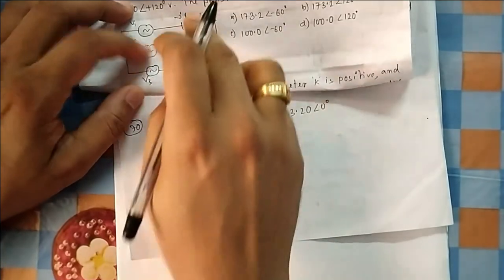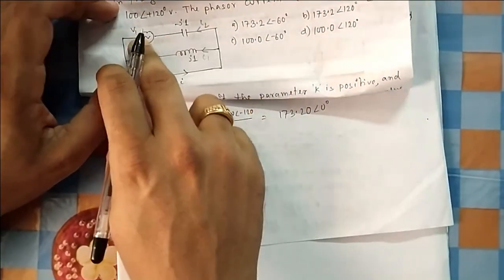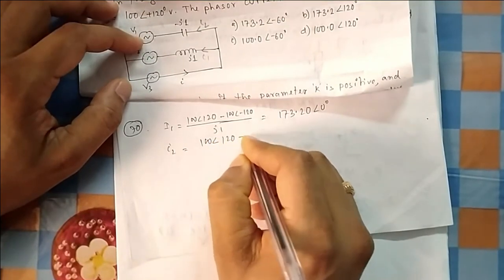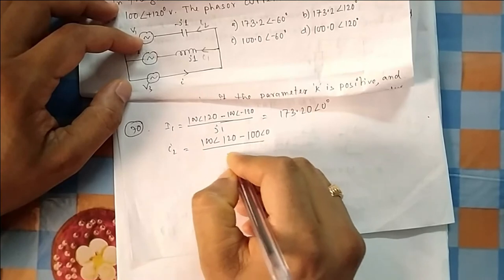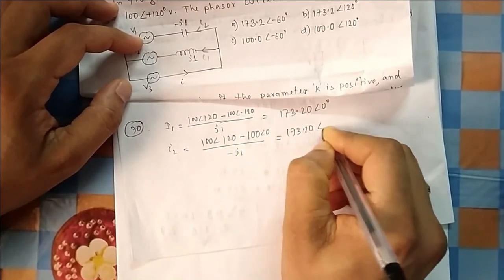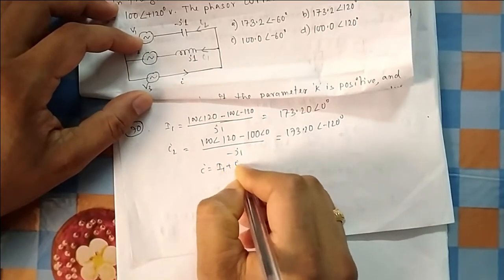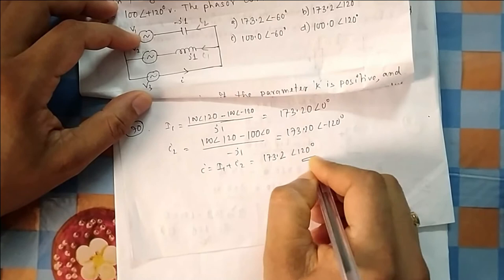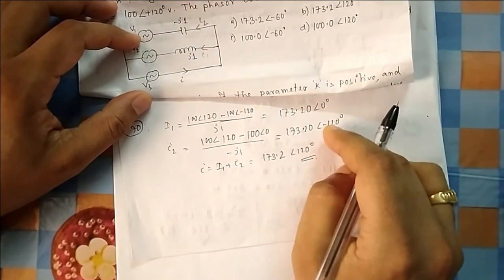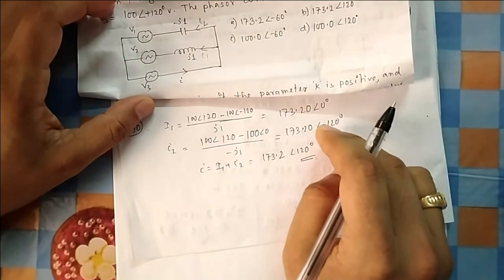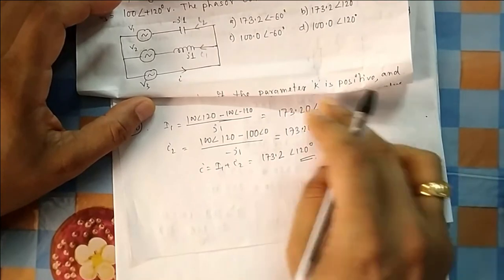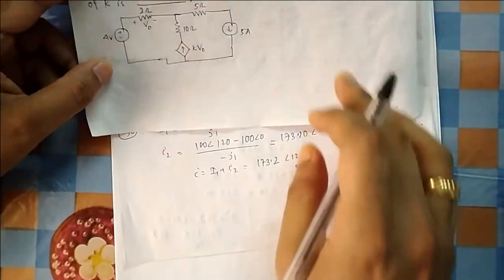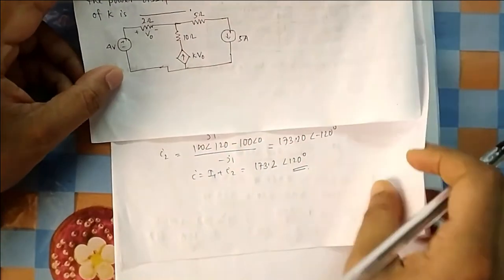Similarly, I2 = (V3 − V1) / (−j1) = (100∠120° − 100∠0°) / (−j1), giving I2 = 173.2∠−120°. Then I = I1 + I2 = 173.2∠120° + 173.2∠−120°. To add phasors, convert polar to rectangular using cosine and sine, then add real and imaginary parts separately — direct polar addition may not be available on a calculator in the GATE exam.